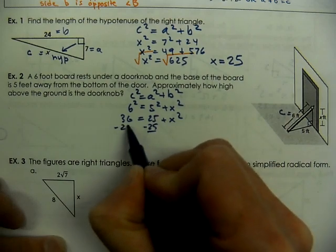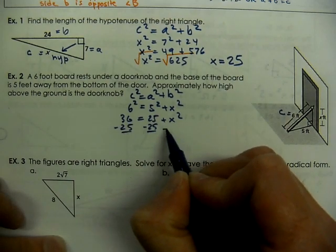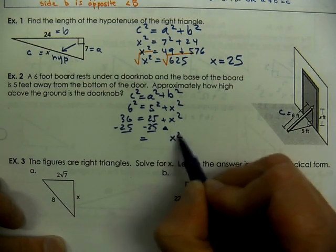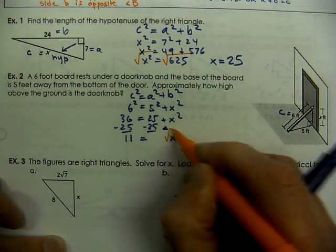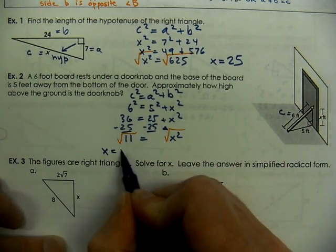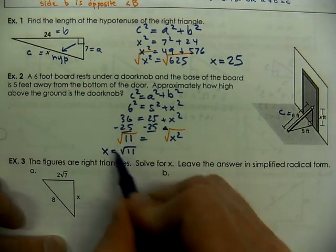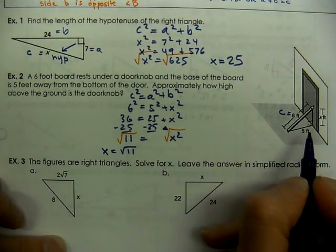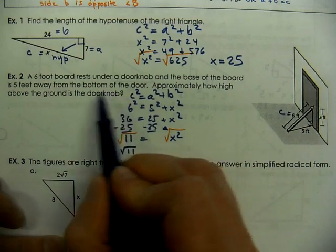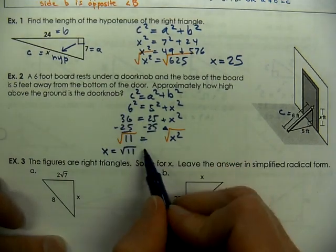So we get 36 equals 25 plus x squared. Subtract 25 from both sides. And we will get the x squared by itself. That gives us 11. And we'll take the square root of both sides. Now 11 is not a perfect square, of course. And that would be our exact answer in feet. But here it says approximately how high. So in this case, we actually want a decimal value.